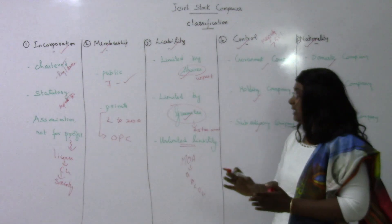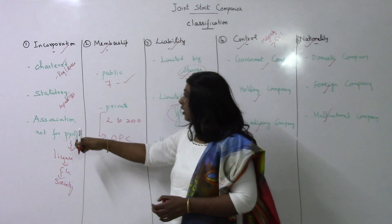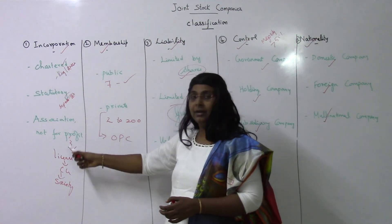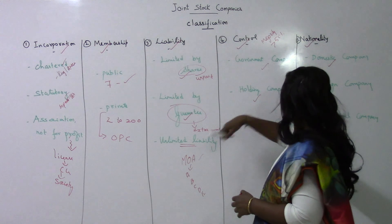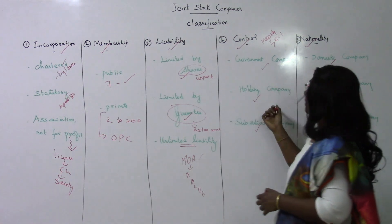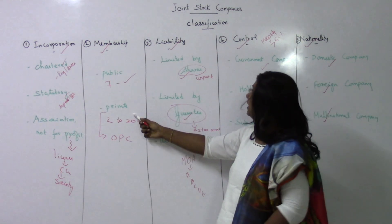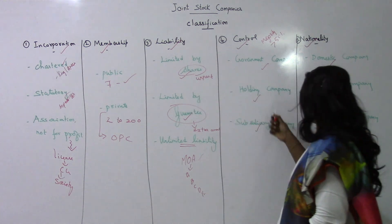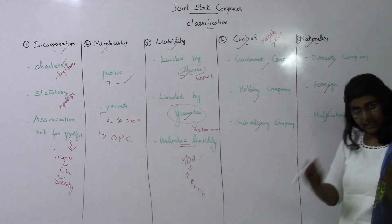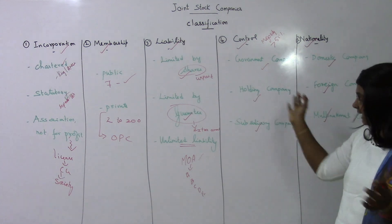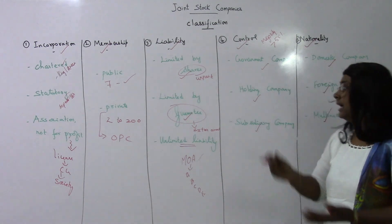A company may be a statutory company, or an association not-for-profit, or limited by shares and a holding company — these classifications can be combined. For example, a private company limited by shares can also be a subsidiary company or a foreign company. There is no restriction on combining these classifications.